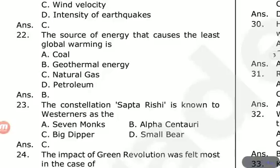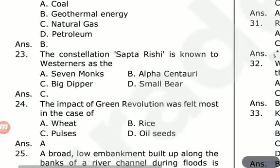The impact of the Green Revolution was felt the most in the case of which crop? The options are wheat, rice, pulses, and oil seeds. The answer is wheat — the Green Revolution had the greatest impact on wheat.